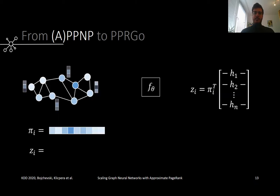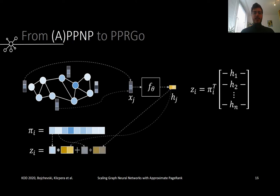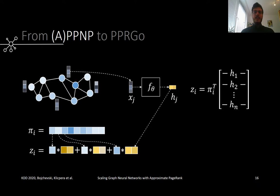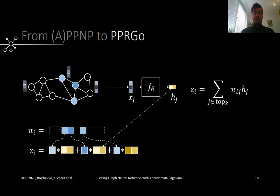Specifically, we learn a function f that maps the node features x_j to logits h_j individually for each node. Once all the logits h_j for all nodes have been obtained, the final predictions for a given node i are a simple weighted combination of the logits of all other nodes, where the weights are determined by the personalized page rank scores for that node. The main idea behind PPR-GO is to approximate the entire vector pi of page rank scores with a sparse vector which contains only the k largest scores, corresponding to the k most important nodes. This is a good idea because for real-world networks, the page rank vectors are localized, which means most of the large scores are concentrated on just a few nodes, while the rest of the nodes have scores close to zero.